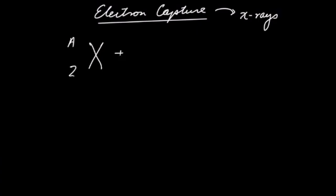We also have what we refer to as the electron capture, which is when a nucleus captures one of the electrons and turns a proton into a neutron. And this results in emission of X-rays.